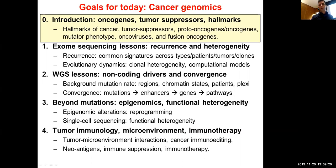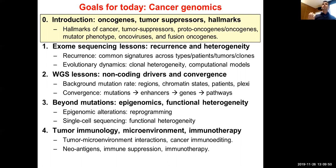We'll go beyond the sequencing paradigm to talk about epimutations, epigenomics, functional heterogeneity, and reprogramming cancer cells. We'll also look at how single-cell sequencing applies to cancer genomics. Lastly, we'll shift gears to talk about the relationship between the tumor and the immune system — one of the most promising areas of therapeutics — and how we can manipulate that relationship to fight cancer.